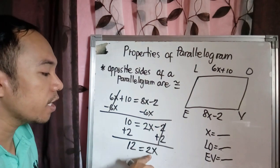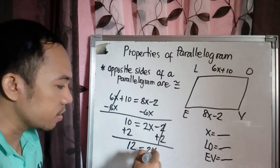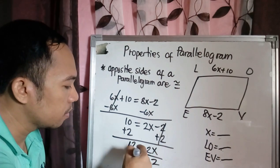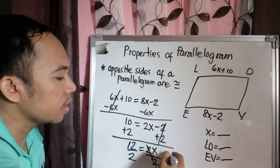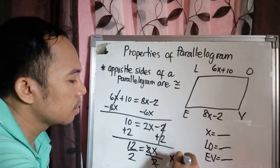So this is now 2X equals 12. By division property of equality, we divide 2 both sides. So our X here is 6.